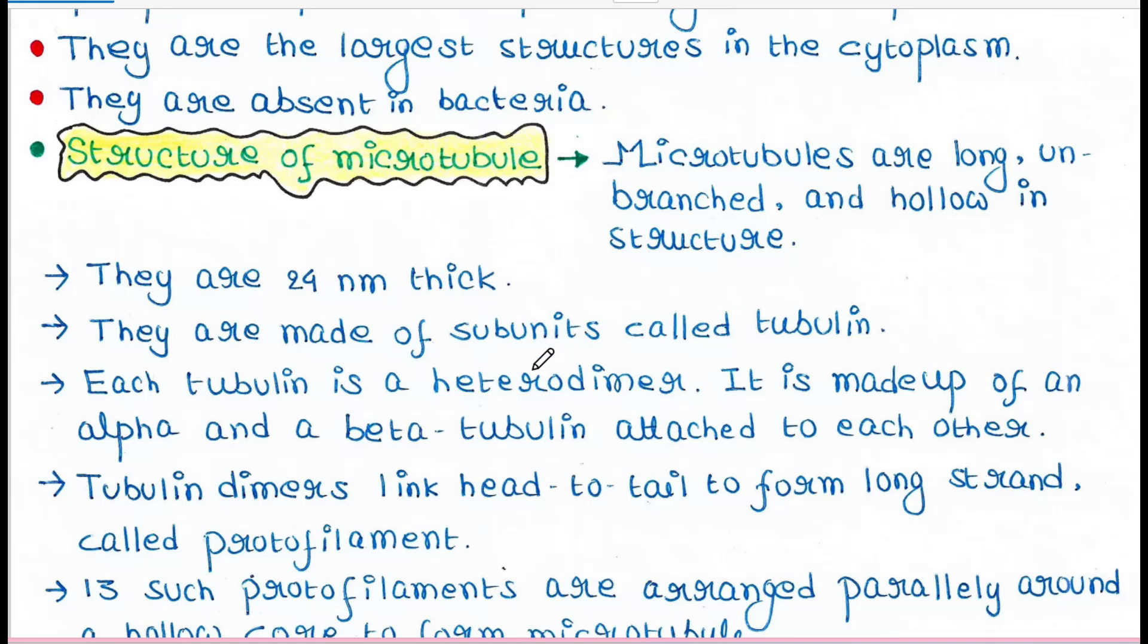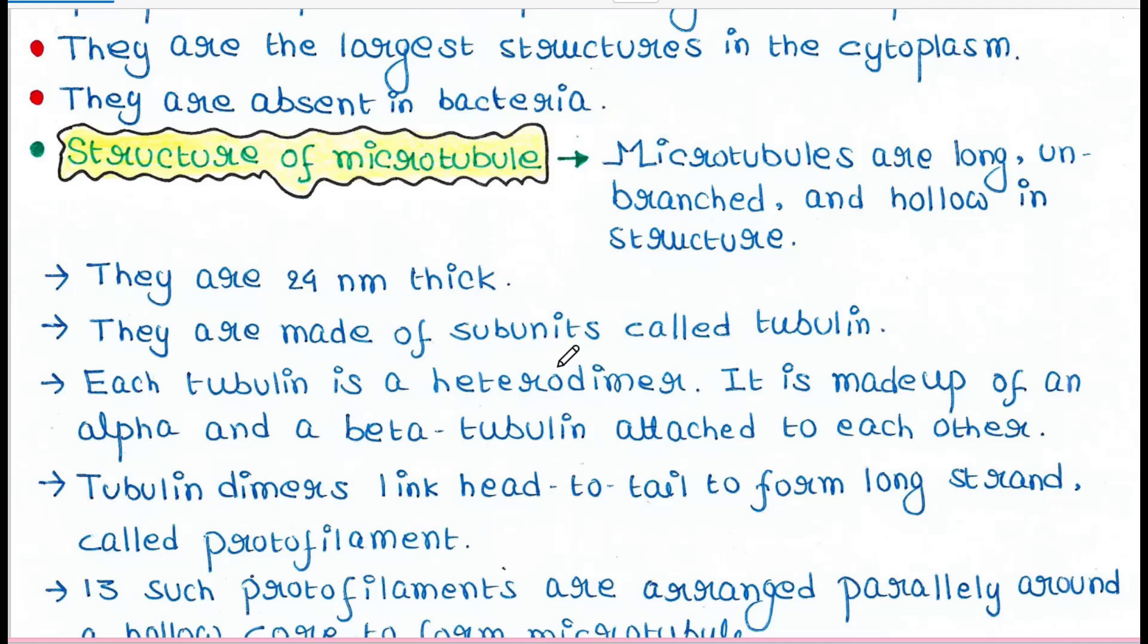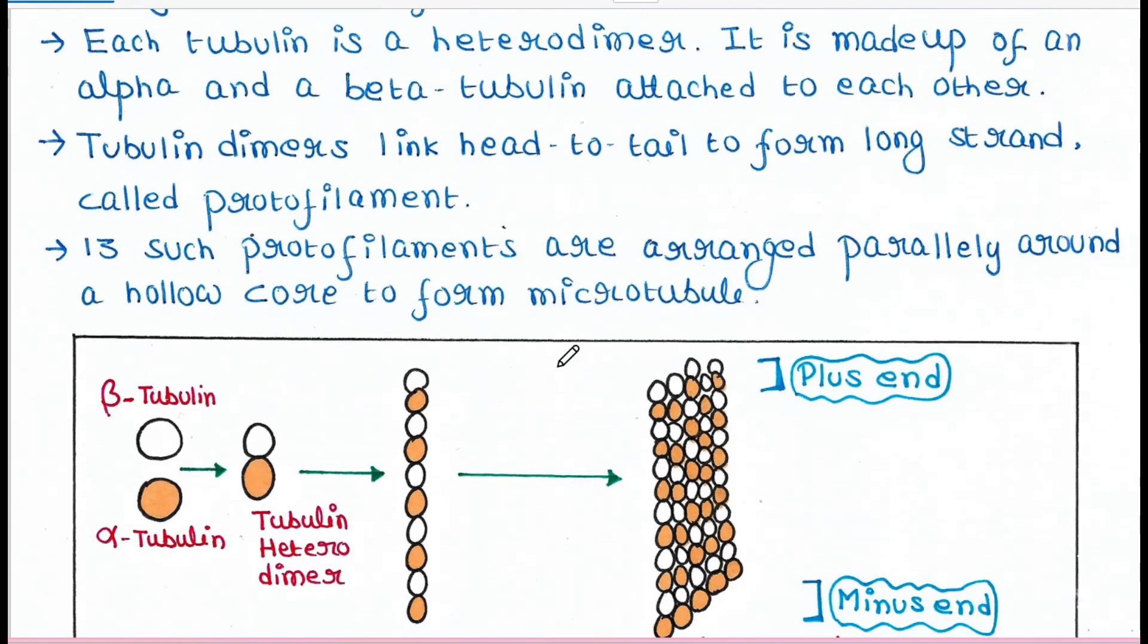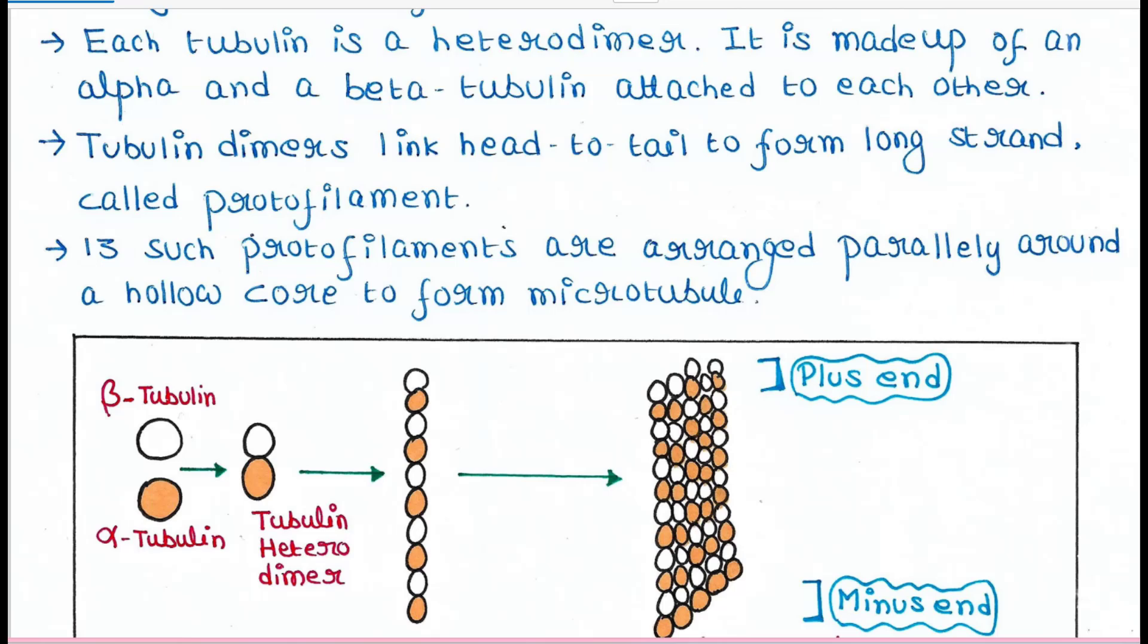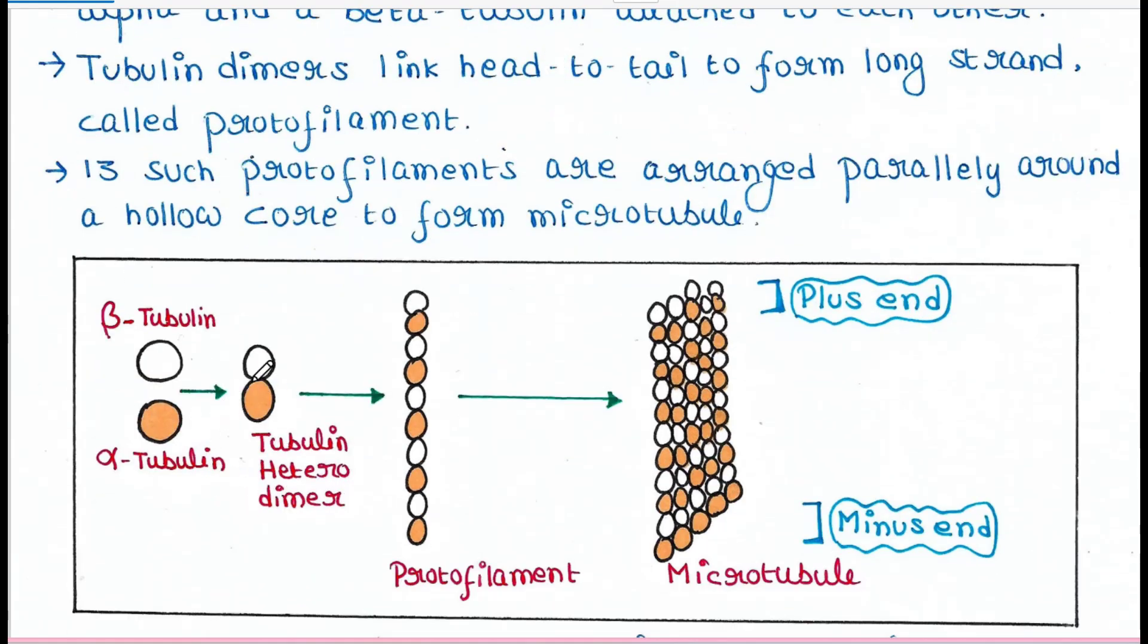They are made up of subunits called tubulin. Tubulins are proteins, and each tubulin is a heterodimer. It is made up of an alpha and a beta tubulin attached to each other. So this is the tubulin heterodimer. It contains two monomers: alpha tubulin and beta tubulin.